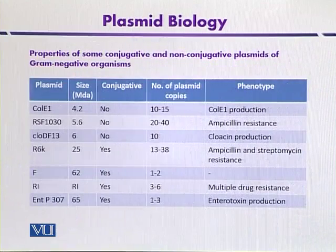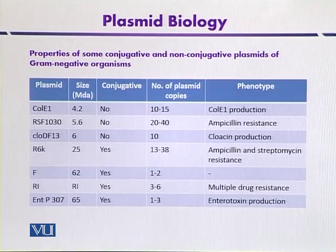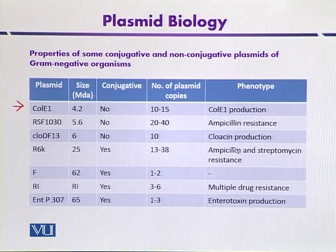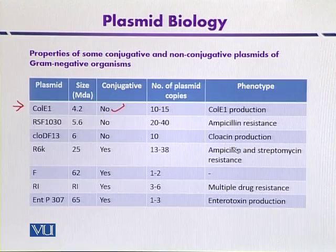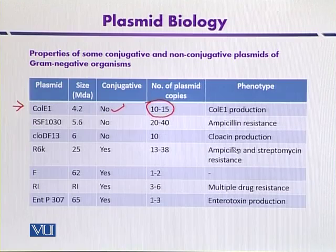This table indicates the properties of some conjugative and non-conjugative plasmids of gram-negative microorganisms. The first plasmid, ColE1, has a size of 4.2 megadaltons and is an example of a non-conjugative plasmid, not involved in conjugation. It is present at around 10 to 15 copies per cell and its beneficial trait is the production of the ColE1 antibiotic.